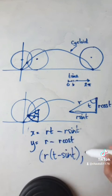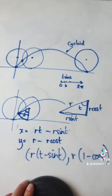And the y location would be r bracket 1 minus cos t. Okay?